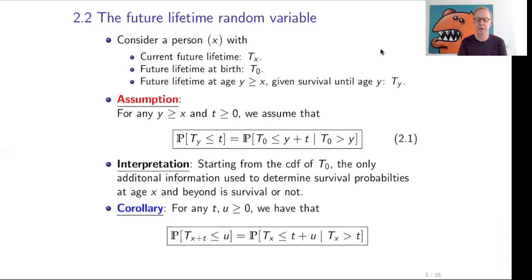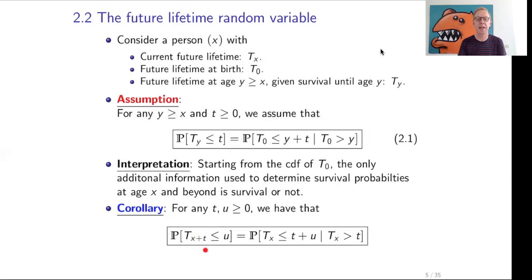There is a corollary to Assumption 2.1. For non-negative t and u, the probability that T_{x+t} is less than or equal to u can always be written as the conditional probability that Tx is less than or equal to t plus u, given that Tx is greater than t. So any survival probability at an age later than x can always be brought back to survival probabilities at age x. Probabilities at different ages are connected by this conditional assumption.